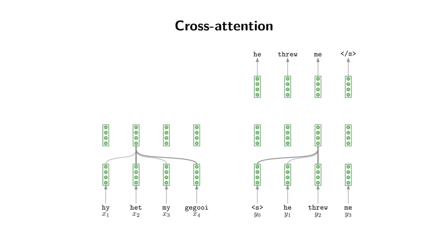So this is my encoder over my input sentence, and this is the decoder which produces my output sentence — in the ideal case, 'he threw me, end of sentence.' The bottom parts of the encoder and decoder are just going to be standard self-attention. For each token you get value, key, and query, do the dot product, softmax, and then get a weighted value vector. For the encoder I do that in the standard way — this one would be a weighted sum of the value vectors. For the decoder, it's standard self-attention but with masking.